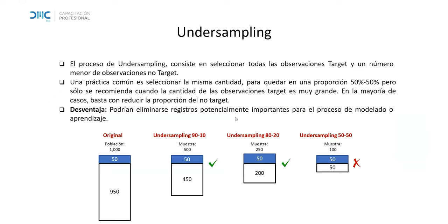Empecemos hablando del undersampling. Cuando tenemos una muestra desbalanceada — digamos 95% de clase no target y 5% de clase target — hay varias alternativas. Un primer punto importante: en bastantes posts veo que lo que se hace es, al aplicar undersampling, pasar de la situación original a un 50-50. Eso no es obligatorio. Por alguna razón, llevar las cosas a 50-50 se ha entendido como mandatorio en el trabajo con muestras desbalanceadas, pero no lo es.